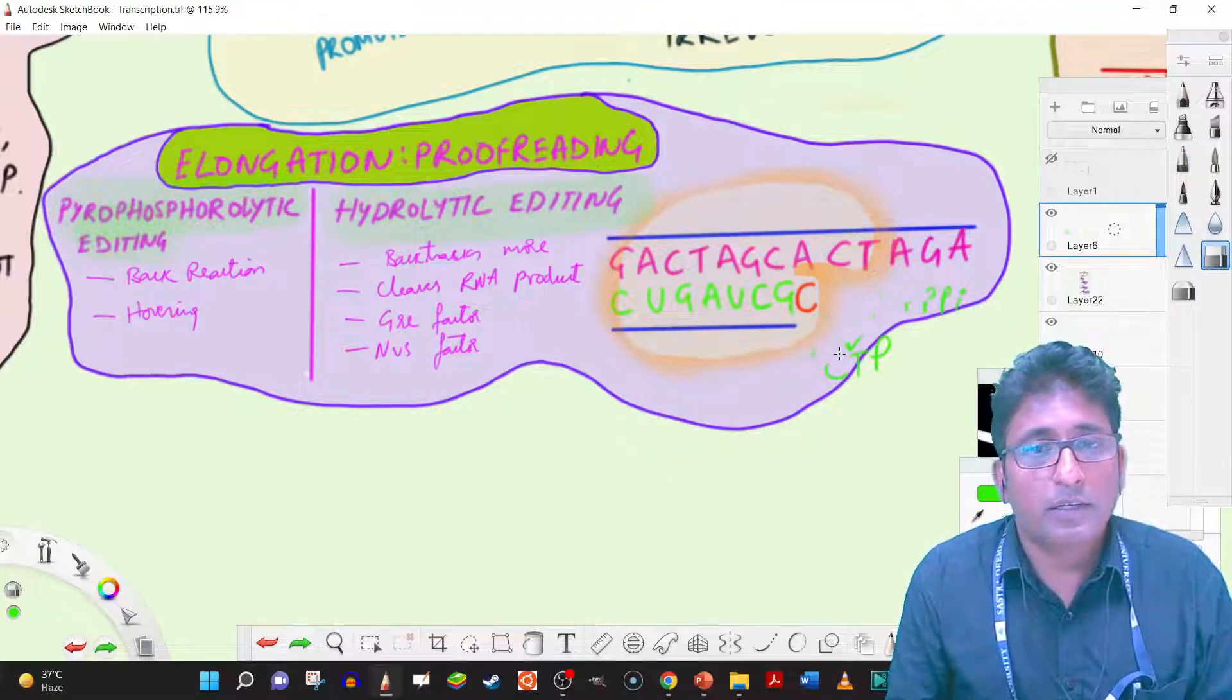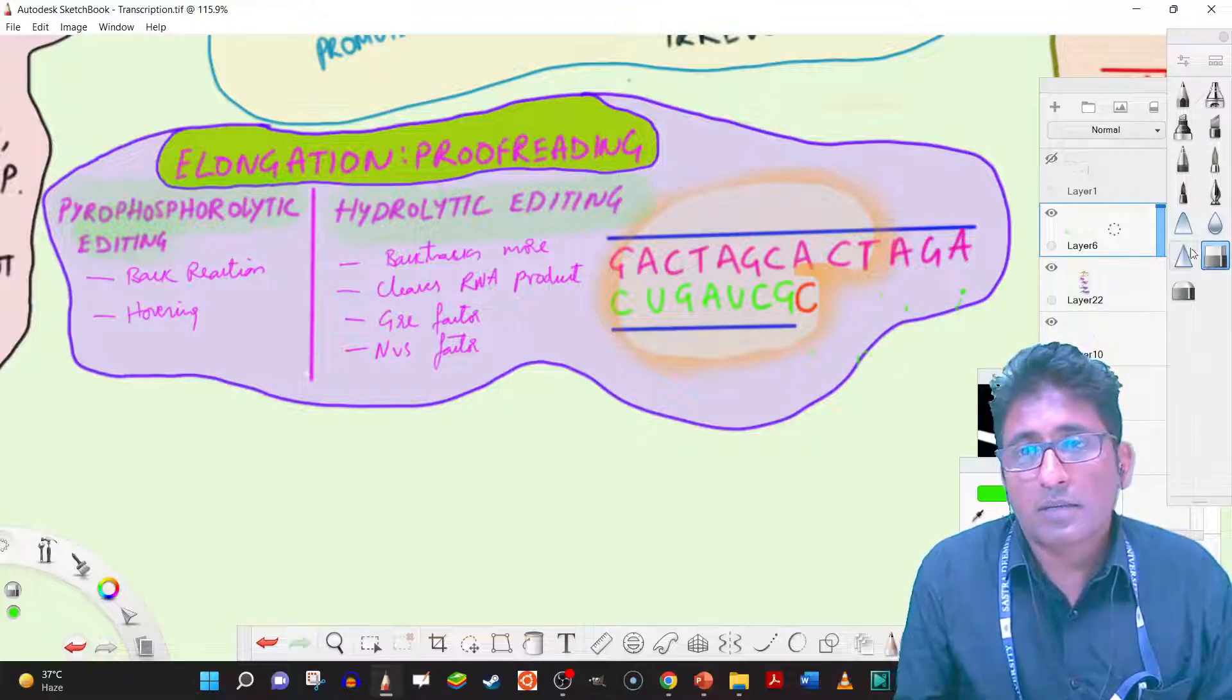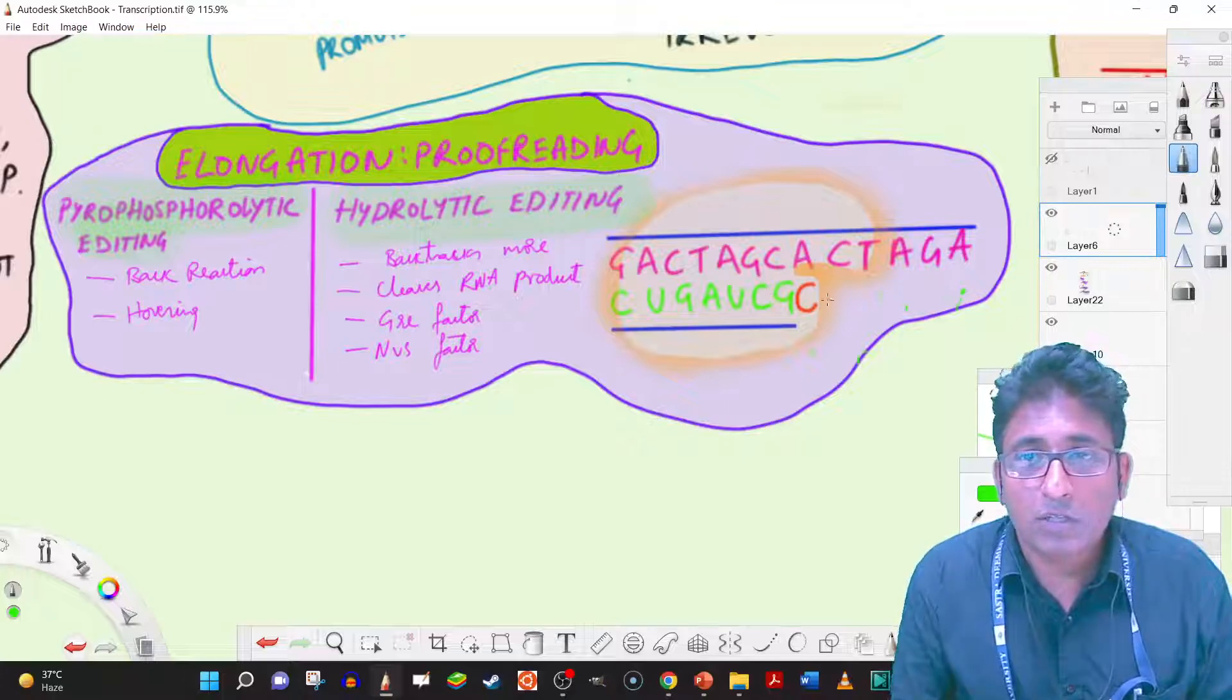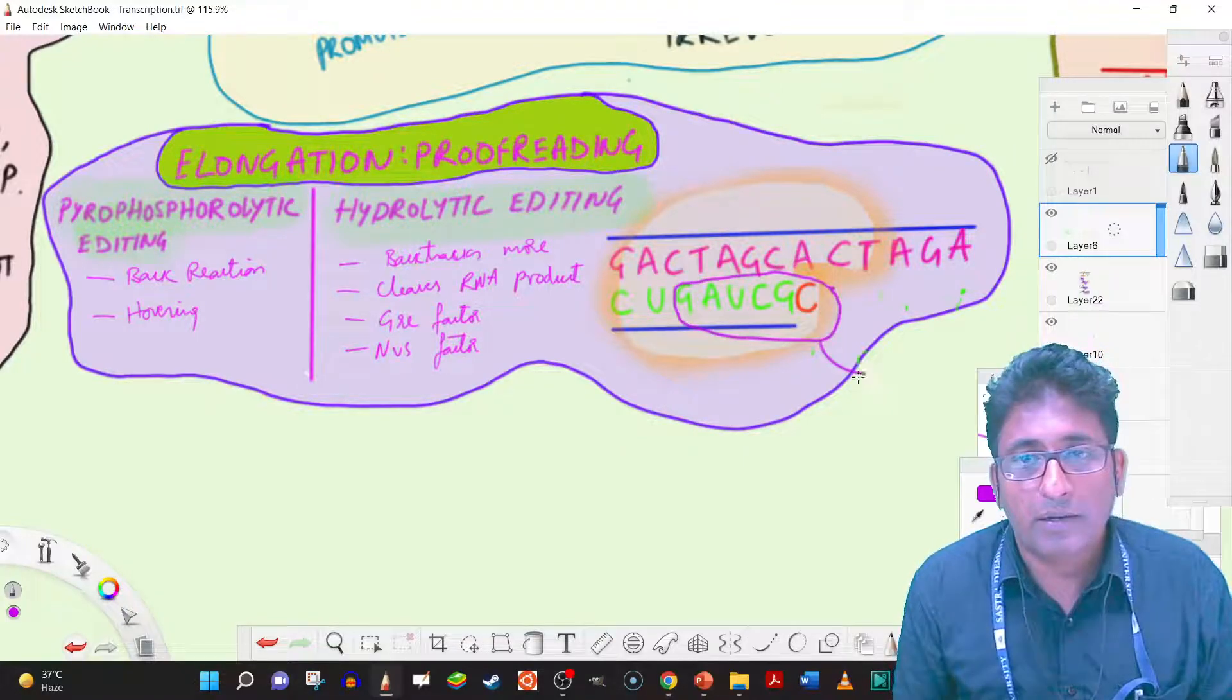There are also other mechanisms, as we said, the one that is called as hydrolytic editing, which is something like removing this whole part of the RNA. Not just the base that is wrong, but more than that, some of the bases are removed.